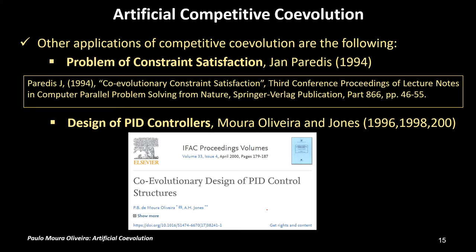Other applications of artificial coevolution include the work of Jan Paredes in 1994, who applied it to the problem of constraint satisfaction. This is the paper: 'Co-evolutionary Constraint Satisfaction.' Also, myself and Jones in 1996, 1998, and 2000 — this is the paper from 2000 — 'Co-evolutionary Design of PID Control Structures,' where one population represented PID controllers in a genetic algorithm and the other represented the model parameters of the plants to be controlled.